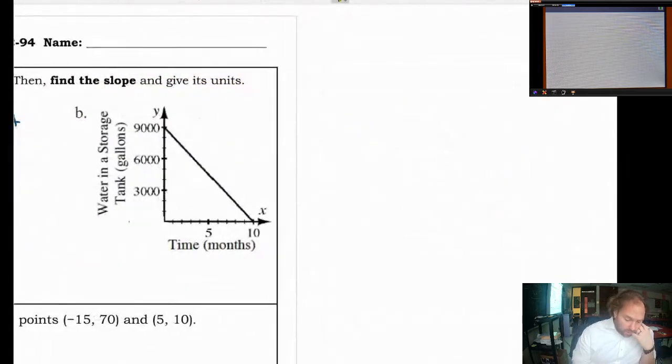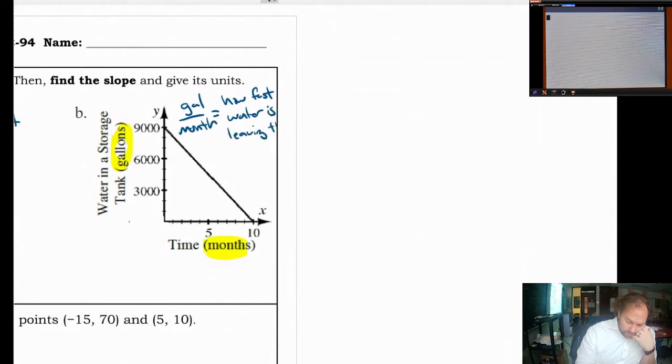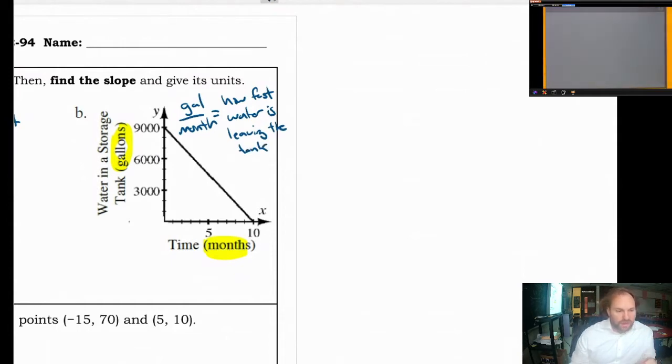How the height of this candle is changing over time. Over here, we have water in a storage tank in gallons over time in months. So, this is gallons per month. And slope is always a measurement of how things are changing. So, in this case, this is how fast water is leaving the tank. This is a negative slope. You can tell that it's heading down to the right, and that means it's going to be a negative slope, because it's leaving the tank.